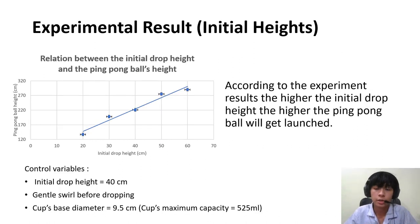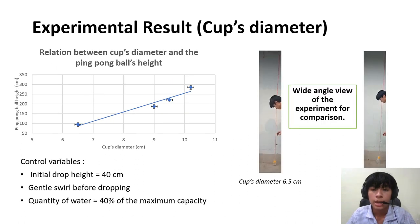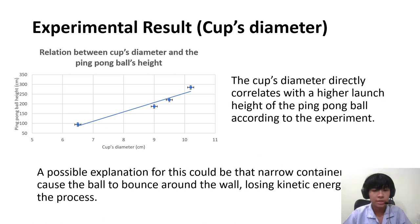Here's the experimental result for the initial drop height. And here's the experimental result for different cup diameter. One possible explanation for this is that narrow container can cause the ball to bounce around more, losing kinetic energy in the process.